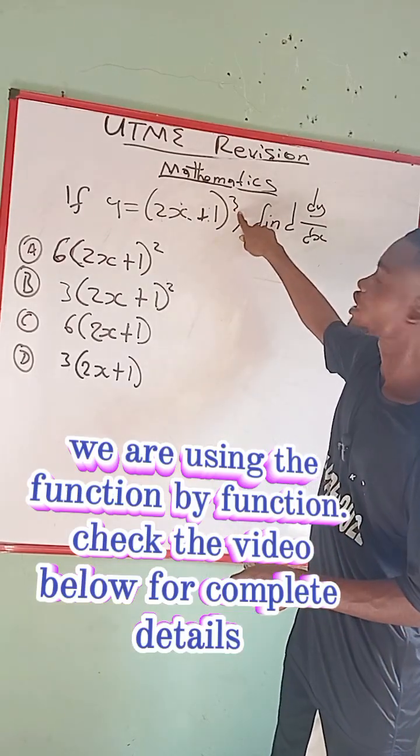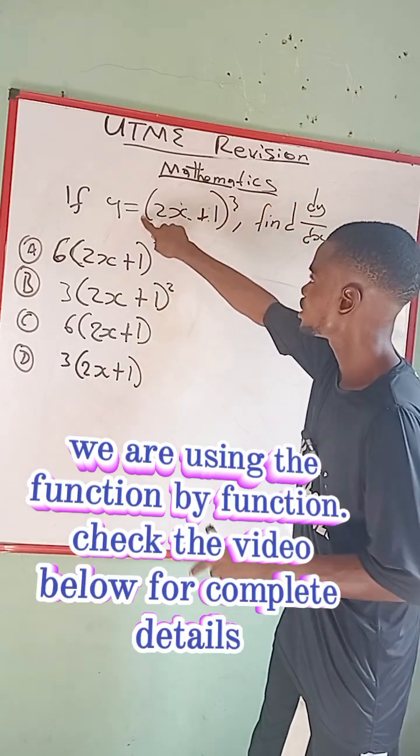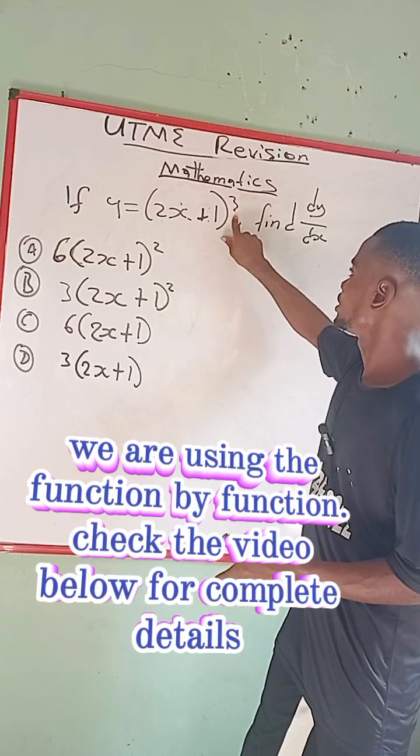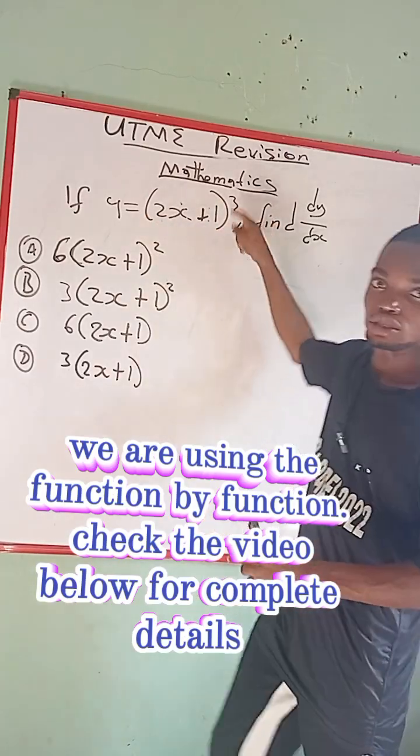You're going to differentiate 3. Differentiating 3 means taking 1 away from it and bringing it down because it's a power. You also differentiate the bracket and multiply it by this other side. So differentiate 3, multiply it here. Differentiate the bracket, multiply it here.